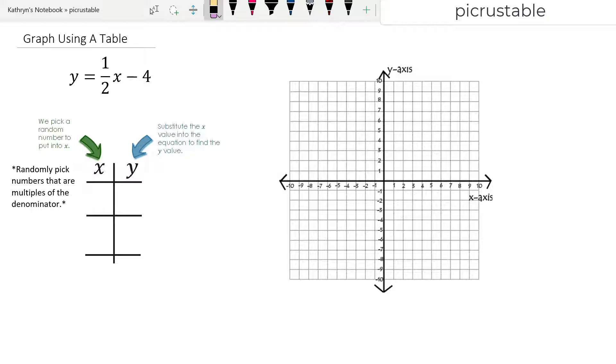So in this case, we're going to pick multiples of 2. For instance, 2. So I have y equals 1 half x minus 4. Now I'm going to put 2 in there, and it turns out 1 half times 2 is 1 minus 4, so we end up with negative 3. Now 2 negative 3 is really easy to graph.